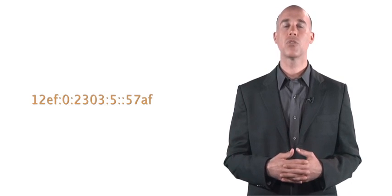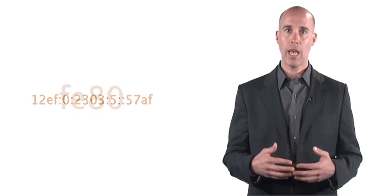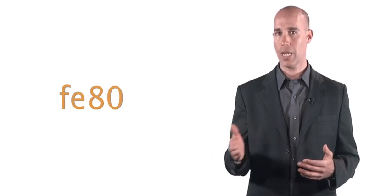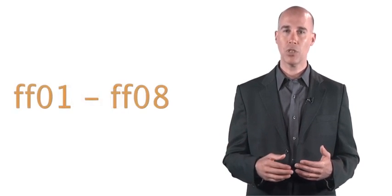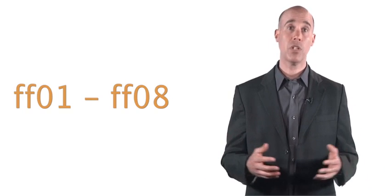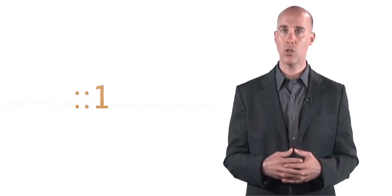There are also several reserved address ranges. Addresses beginning with FE80 are local unicast addresses. Addresses beginning with FF01 to FF08 are multicast addresses. Private network addresses are reserved to this range. The loopback address is colon colon one.